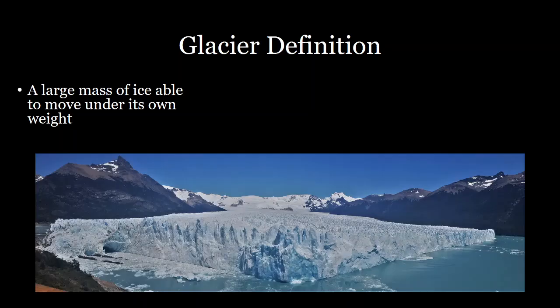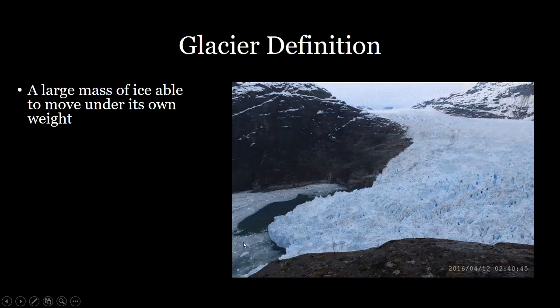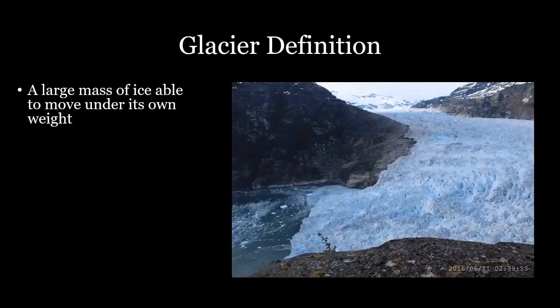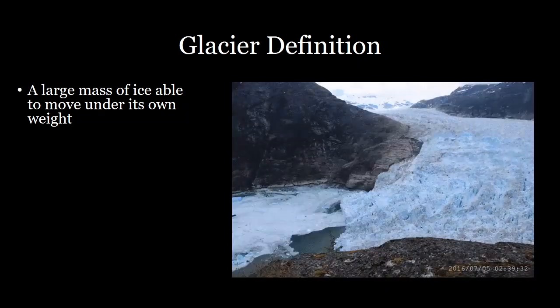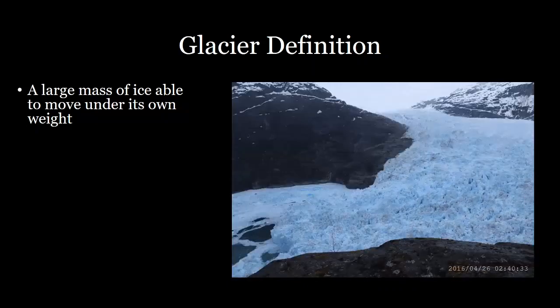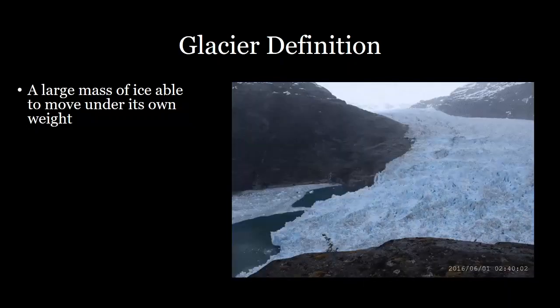So first let's define what a glacier is. A glacier is a mass of ice that's large enough to move under its own weight — a very large amount of ice that's actually deforming because it's so large. This is a beautiful glacier in Argentina that I was lucky enough to visit, and you can see a time lapse of it. It's clearly moving downstream, so glaciers act like viscous fluids and will flow just like honey moving down a landscape.